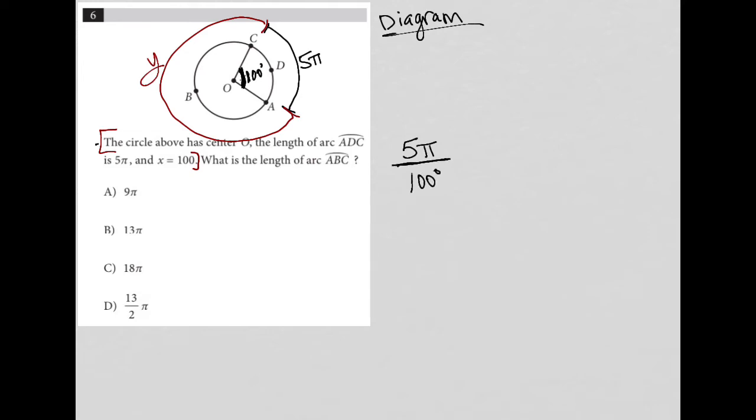These two things go together. Anytime I see a question that has a relationship between two different units, I'm going to write it as a fraction. I'm saying there's a relationship between my central angle and the arc that it creates.